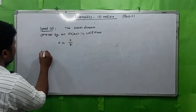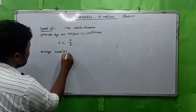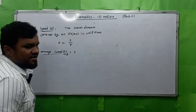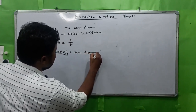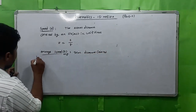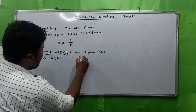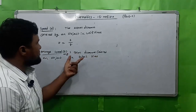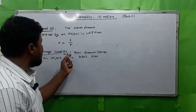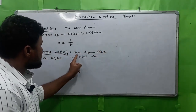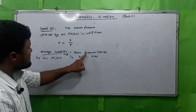Coming to average speed. Average speed V_avg is defined as total distance covered by an object in unit time. If you observe the difference: speed is actual distance covered by an object in unit time, V = S/T. But average speed means total distance covered by the object divided by total time.